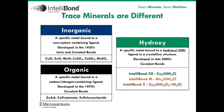The most recent category of trace mineral is the hydroxy trace minerals. These are a specific metal bound to a hydroxy or OH group as the ligand in a unique crystalline structure. These were developed in the 2000s and, similar to organic trace minerals, they utilize covalent bonding as well. Examples of these would be Intellibond copper, Intellibond zinc, and Intellibond manganese.